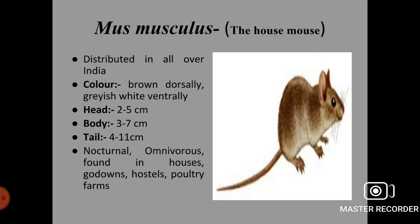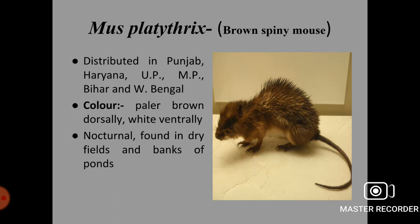Next rodent species is Mus platythrix, the brown spiny mouse. It is distributed in India in states like Punjab, Haryana, UP, MP, Bihar and West Bengal. Color is paler brown dorsally and white ventrally. This species is nocturnal and is found in dry fields and banks of ponds.